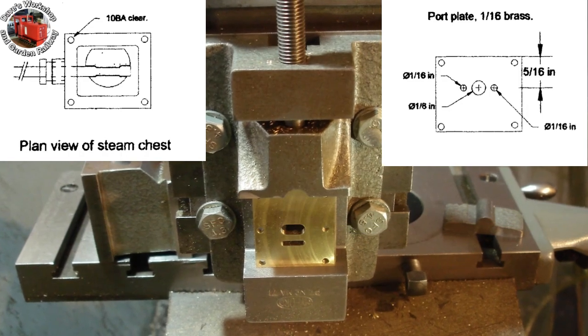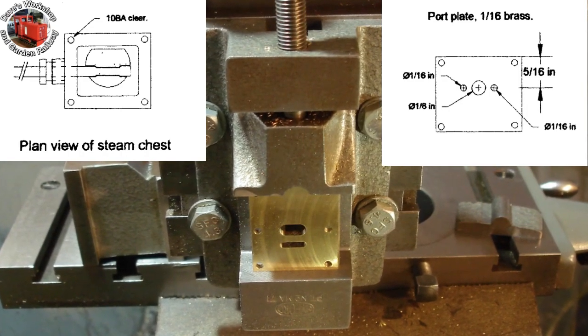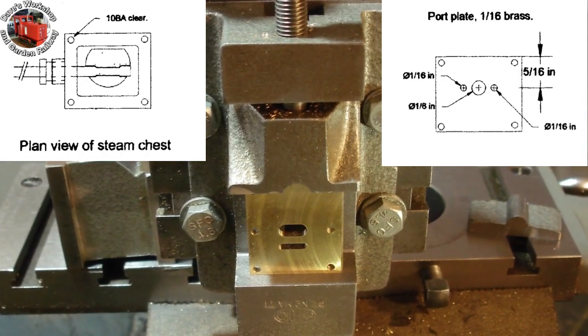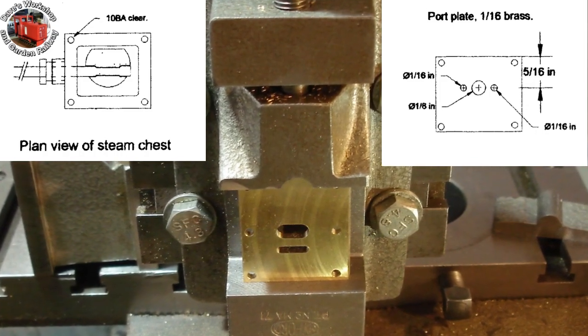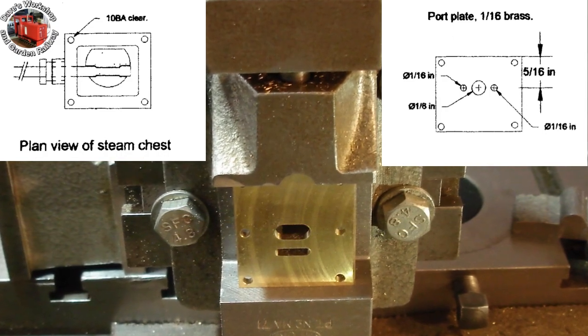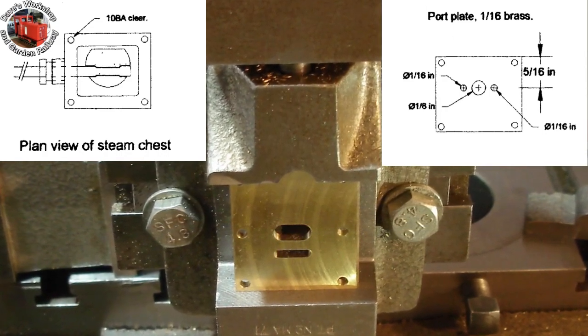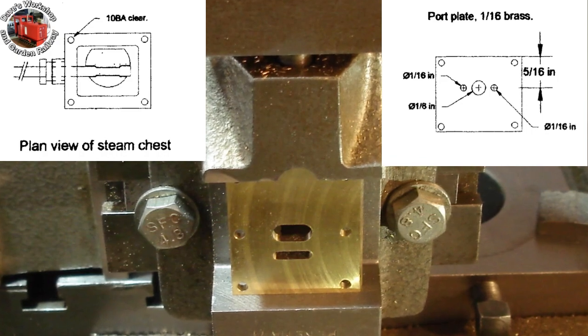Here's a port plate with exhaust port and one steam port milled. I decided to go with rectangular ports centrally positioned rather than the circular ports set over to the side. The larger rectangular ports enabled me to pull them over to the middle.